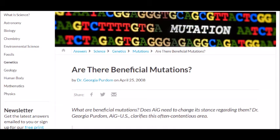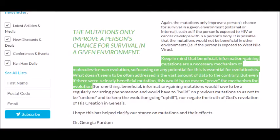So creationists categorically deny all beneficial mutations and, to quote the Answers in Genesis article, say something like this, quote: Keep in mind that beneficial information gaining mutations are a necessary mechanism of molecules to man evolution. So focusing on any potential for this is essential for evolutionists. What doesn't seem to be often addressed is the vast amount of data to the contrary. But even if there were a clearly beneficial mutation, this would by no means prove the mechanism for evolution, end quote.